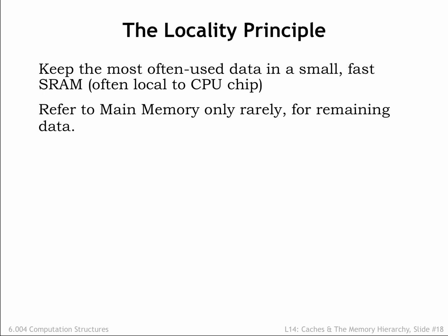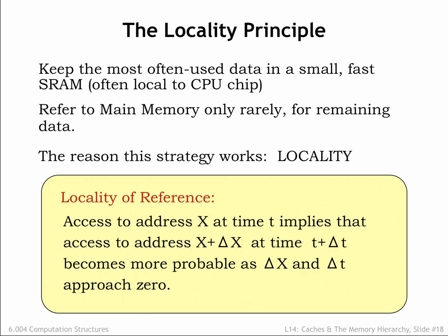If the system is working as planned, DRAM accesses would happen infrequently — for example, only when it's time to bring another block of data into SRAM. If we look at how programs access memory, it turns out we can make accurate predictions about which memory locations will be accessed. The guiding principle is locality of reference, which tells us that if there's an access to address X at time t, it's very probable that the program will access a nearby location in the near future.